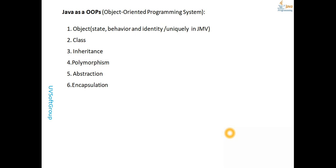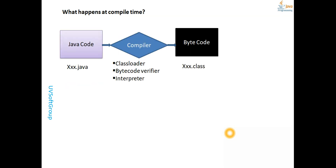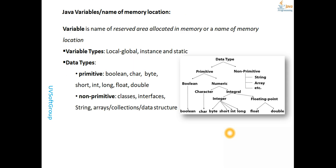We covered variable types and also the different possibilities of different types of data, and also the wrapper classes — how important wrapper classes are to work with data structures or collection frameworks, because data structures or collection frameworks only handle object type data, meaning the wrapper class data.